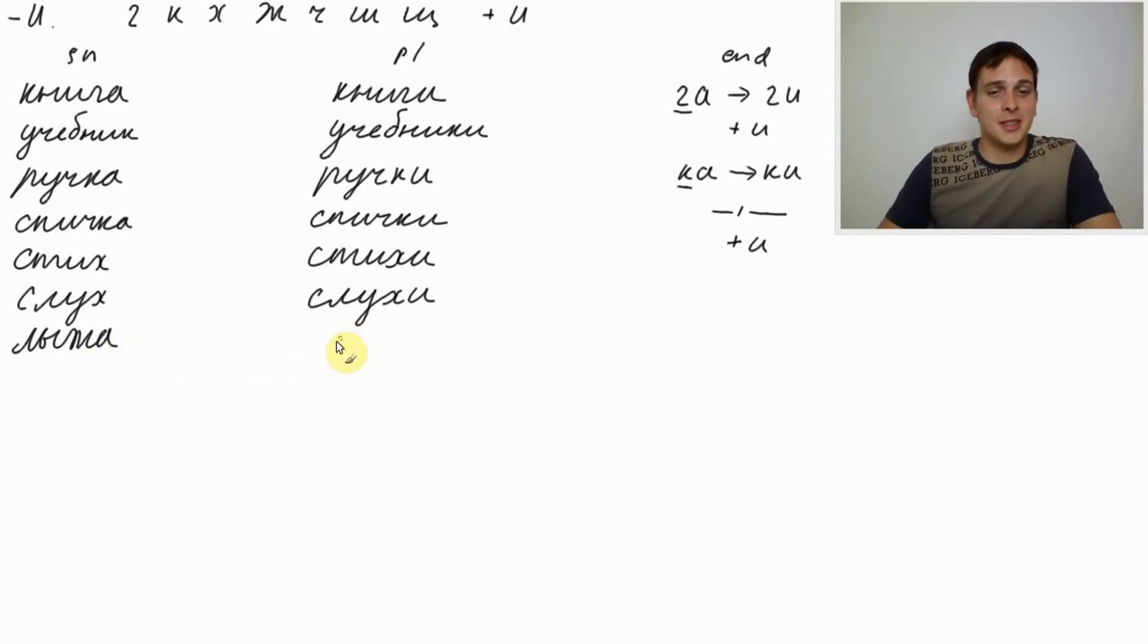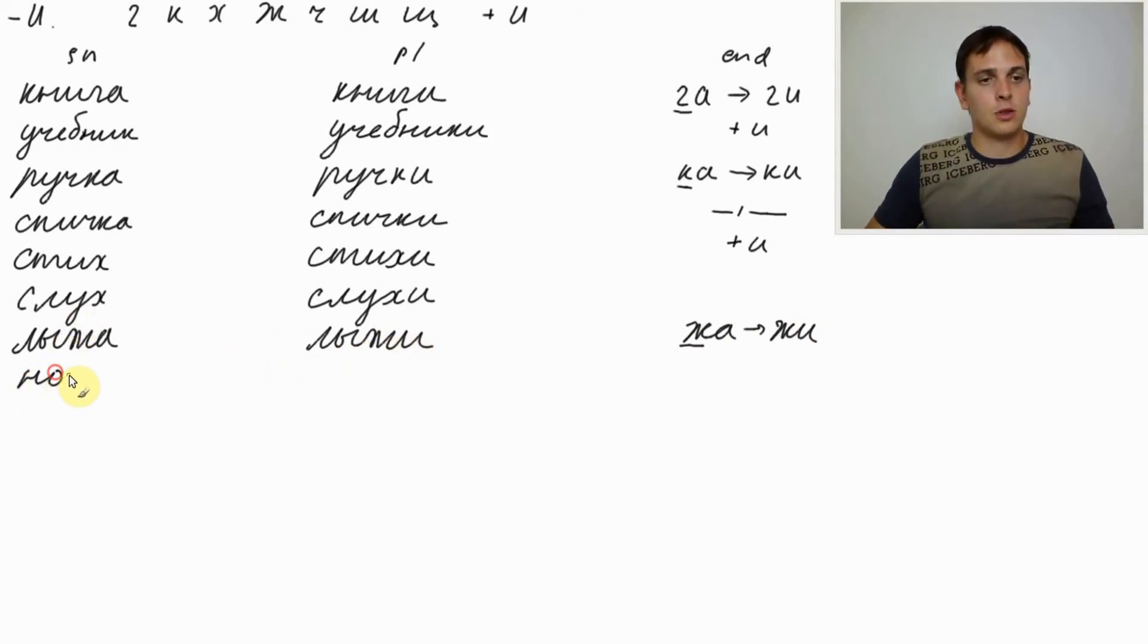And the plural, the SKIS, would be ЛЫЖИ. We recognized ЖА as ending. We learned that Ж is one of the hard consonants from the spelling rule. So we need to replace А with И. ЛЫЖИ. НОЖ. НОЖ is knife. And the plural of НОЖ will be НОЖИ.